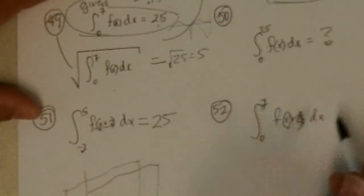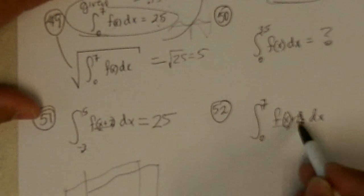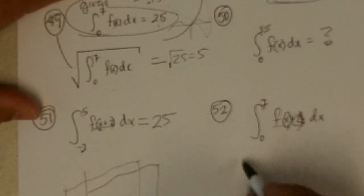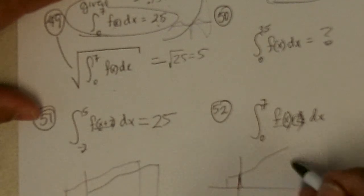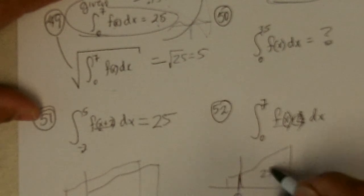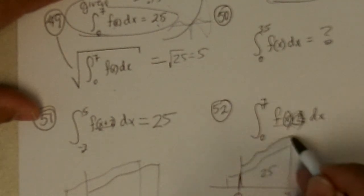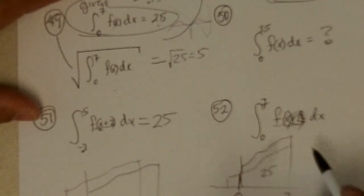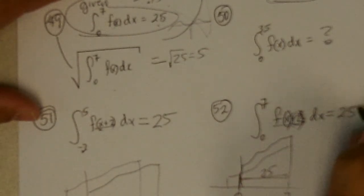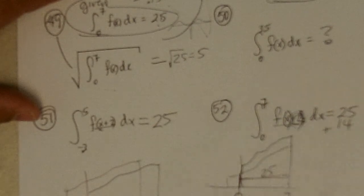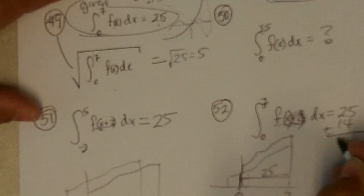Now, what happens if we go from 0 to 7 and we take the curve and raise it up 2? So whatever the curve was that gave from 0 to 7 an area of 25, and now we're going to move that whole curve up 2, well, we're adding basically 2 times 7 or 14 to it. So it's going to be 25 plus 14 more for raising up 2 from 0 to 7. So we get 39.